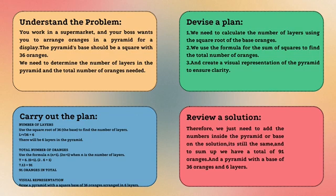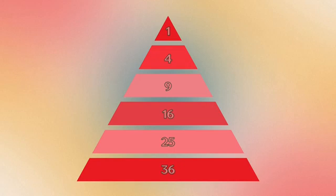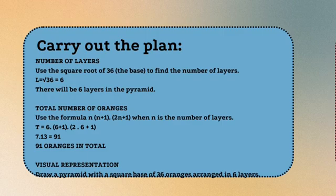Based on the known terms, which is a base of 36 oranges, we will search for the unknown information needed to solve the problem with three steps. Starting with step number one, we need to calculate the number of layers using the square root of the base oranges. Step two, we use the formula for the sum of squares to find the total number of oranges. And lastly, we need to create a visual representation of the pyramid to ensure clarity. We calculated the number of layers by calculating the square root of 36, which is 6. Then we use the formula for the sum of squares, which totaled to 91 oranges.